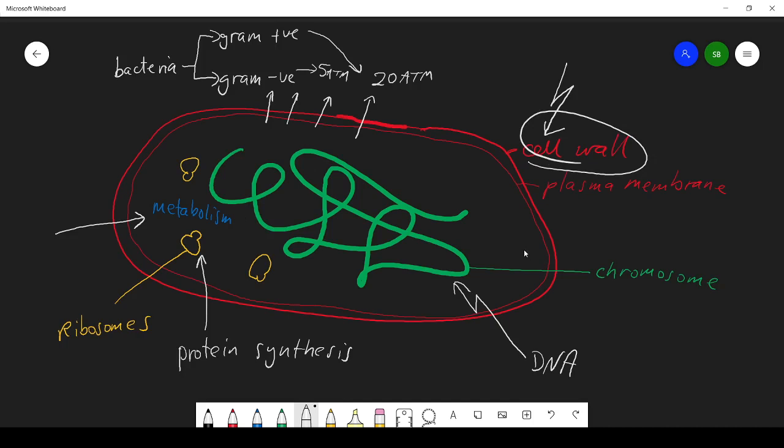There are drugs that attack the cell wall, there are drugs that aim at the DNA, there are drugs that aim at protein synthesis, and drugs that target the metabolism. So well-known drugs that attack the cell wall are the penicillins.